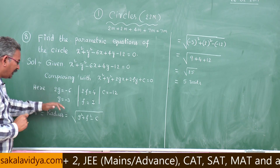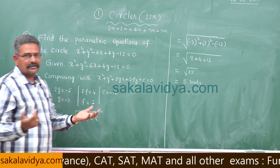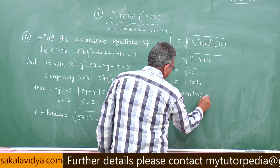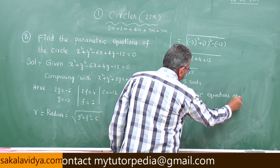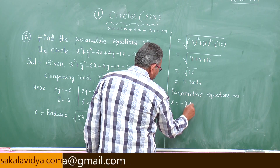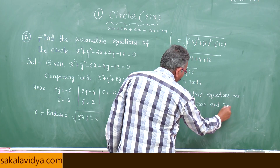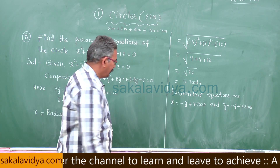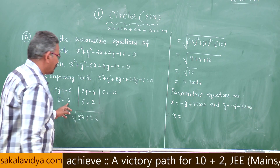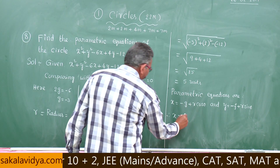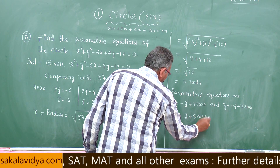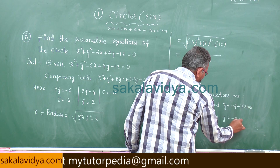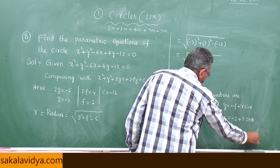Now we know g equals minus 3, f equals 2, and radius equals 5. The parametric equations are x equals minus g plus r cosθ and y equals minus f plus r sinθ. Substituting: x equals 3 plus 5 cosθ and y equals minus 2 plus 5 sinθ. This is the required answer.